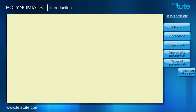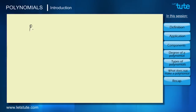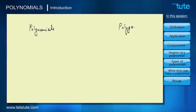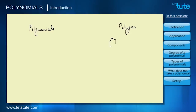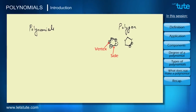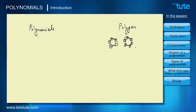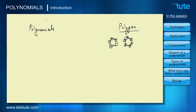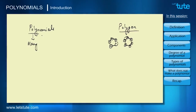Welcome to this session on mathematics. Today we are going to learn about polynomials. Let me start with something familiar — polygons. Polygons are shapes with many sides: pentagons with five sides, hexagons with six sides, decagons, septagons — so many shapes with many sides. They are all called polygons. Similarly, polynomials are expressions with many terms. 'Poly' means many and 'nomials' means terms.